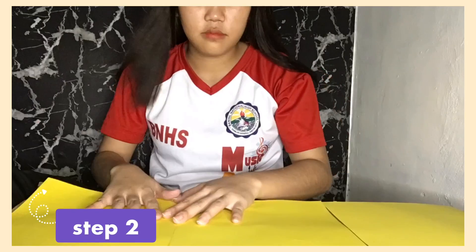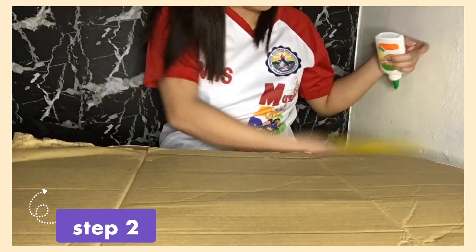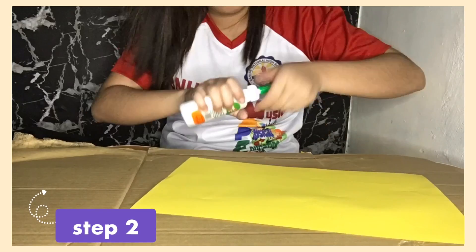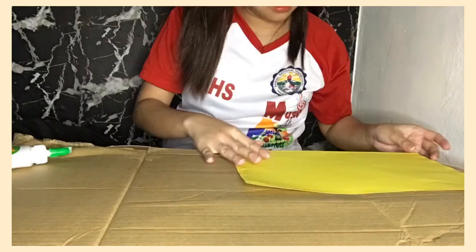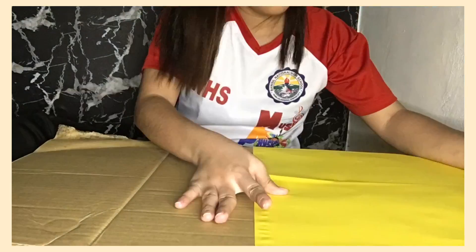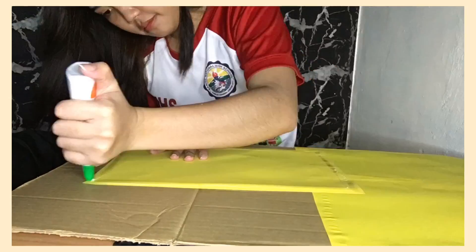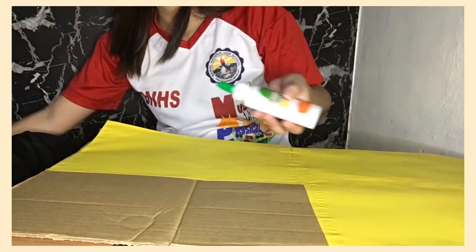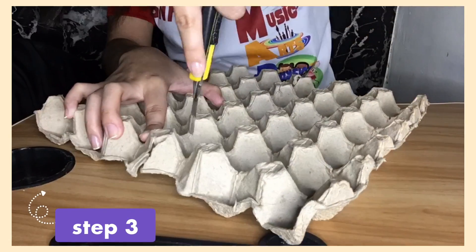The second step: I used construction paper because I didn't like the plain brown — it was too plain for me. So I used a bright yellow color so it would complement the model. I just glued it over the diaper box, and voila, it looked great.